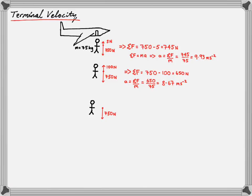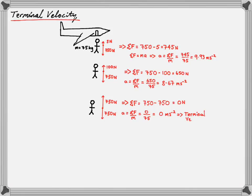Further down, his velocity has increased so much that the force of air resistance has increased all the way to 750 newtons. Something important happens at this point: the net force equals zero. An object with no net force acting on it is either at rest or at constant velocity. So he's reached constant velocity — zero acceleration. This is his terminal velocity; it's the fastest speed he can travel at.